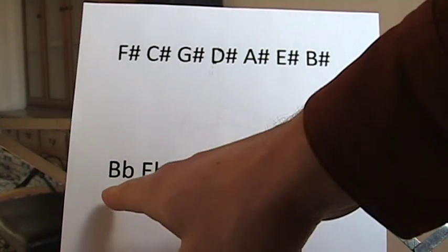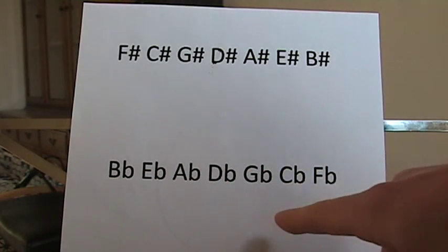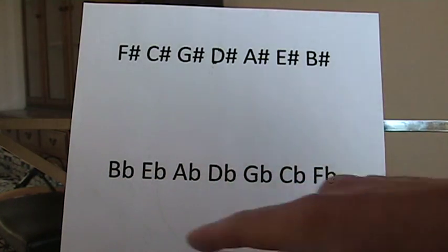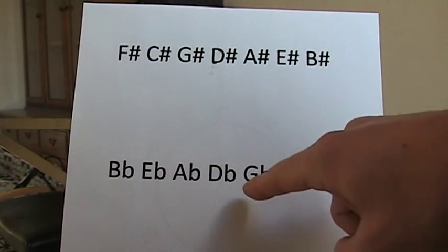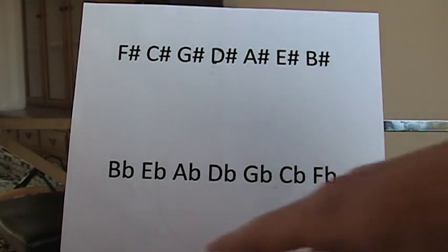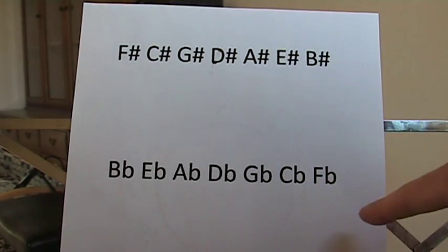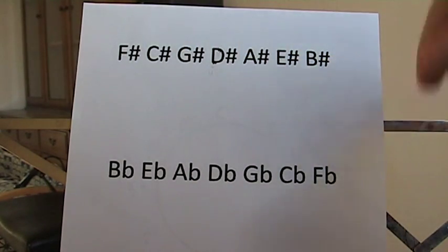For the flats, it's really easy. You just remember bead, G, C, F. So like beads you'd wear around your neck or something - bead, and then G, C, F. So you can think about it as bead G C F, and it's a really easy way to remember it. And then the sharps are back to front.